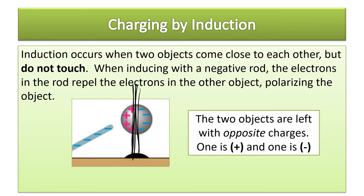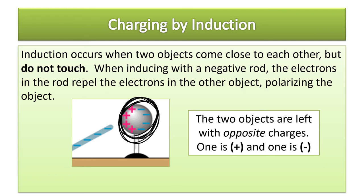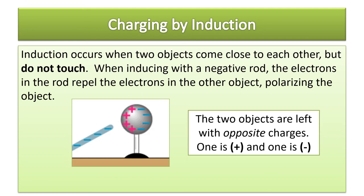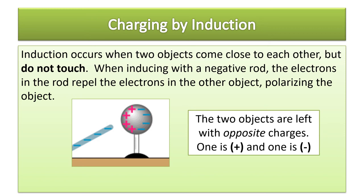When inducing a charge, you could just polarize it, but if you ground the object now, the electrons leave. Then you remove the ground and then remove the charged rod. Because the electrons left the neutral object, you're left with a positive charge. So you have a positively charged object that received its charge by induction from a negatively charged rod — the two objects are left with opposite charges, one positive and one negative, just like with friction.